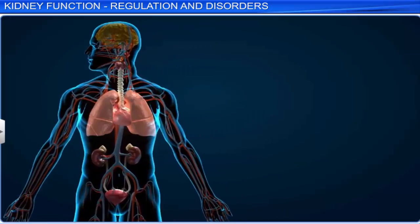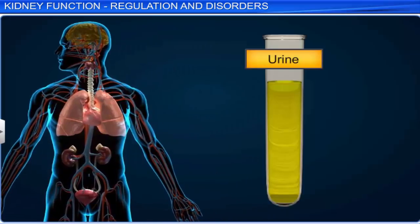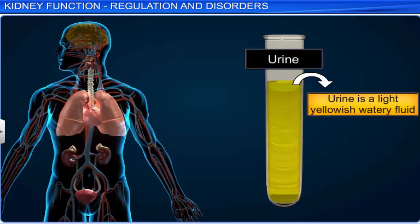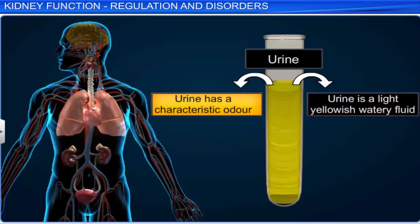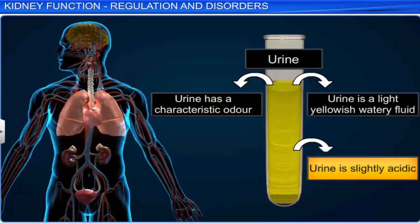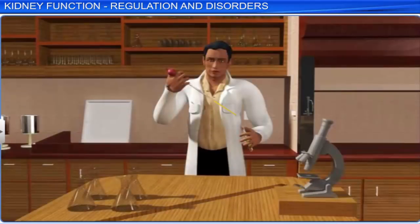On average, an adult human releases about 1 to 1.5 liters of urine every day. The urine released is a watery fluid that is light yellowish in color. Moreover, it has a characteristic odor and is slightly acidic, with a pH value of 6. The characteristics of urine can change according to different body conditions. In fact, a urine test helps to diagnose many metabolic disorders in the body and any malfunction in the kidneys.